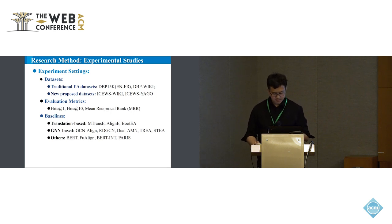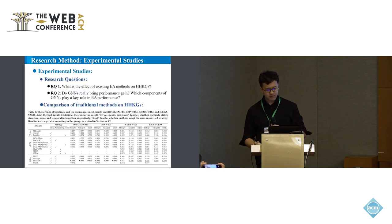This includes translation-based methods, GNN-based methods, and other representation methods. We aim to spotlight two main questions. First, what is the effect of existing EA methods on HHKGs? And second, do GNNs really bring performance gain? And which components of GNNs play a key role in EA performance?